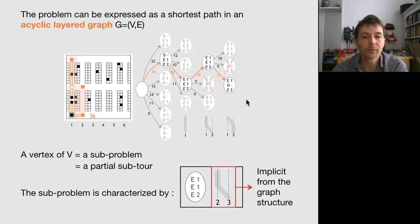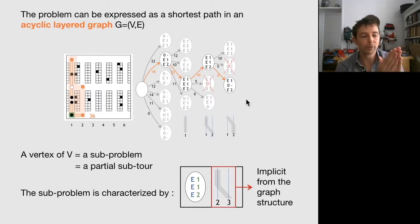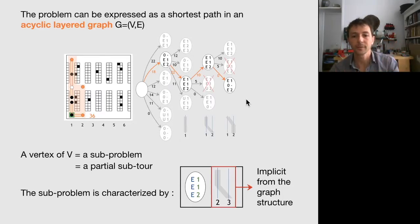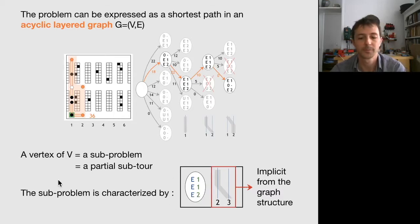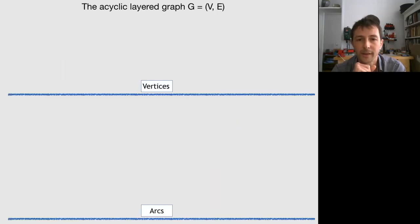As we move through the graph, we move from one subproblem to a bigger subproblem, moving the separator through the grid. This positional information can be found from the structure of the graph. Let's say a bit more about the graph itself and give some examples of its vertices and arcs.